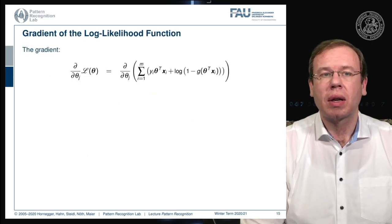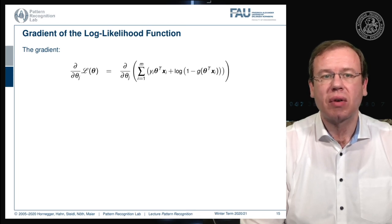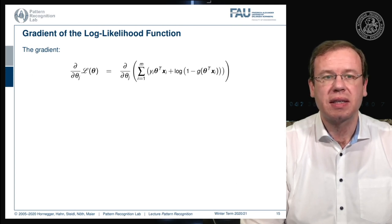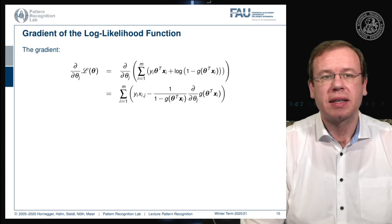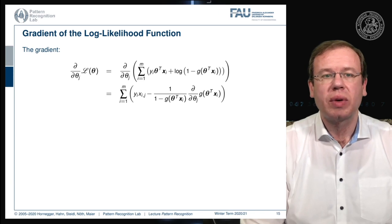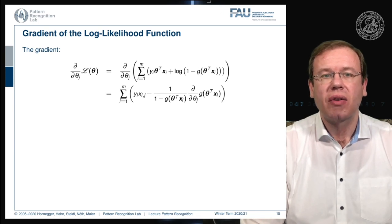Let's recall our log-likelihood function and compute the derivative with respect to our parameter vector theta. The derivative operator is linear, so we can pull it in. The first term in the sum is actually linear in theta, so theta cancels out — it's going to be only our yi times xij, where xij is the component-wise formulation of the respective vector. We also need the derivative of the logarithm of the sigmoid function.